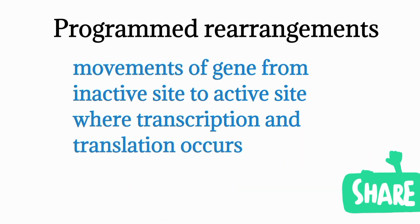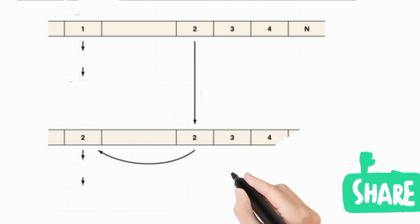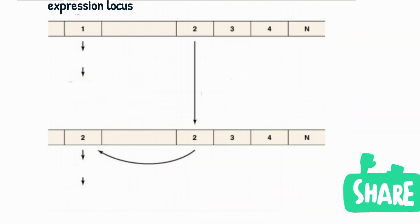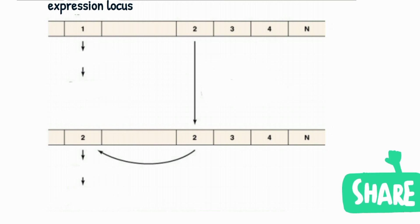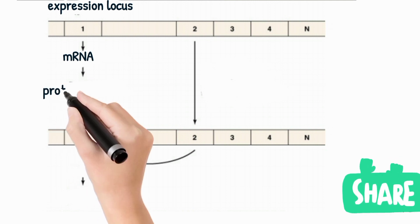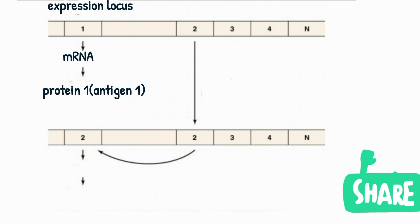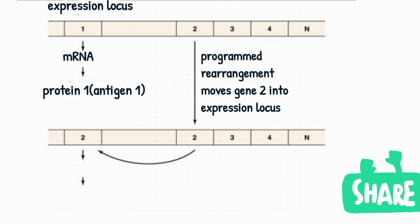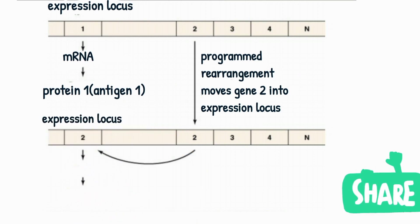The active site is where transcription and translation — that is protein synthesis — occur. To better understand, we have an expression locus, which is the active site. This expression locus synthesizes messenger RNA through transcription, and then messenger RNA forms proteins through translation. In programmed rearrangement, the inactive sites are represented by two, three, and four. A copy of the gene from the inactive site is made and transferred to the expression locus.